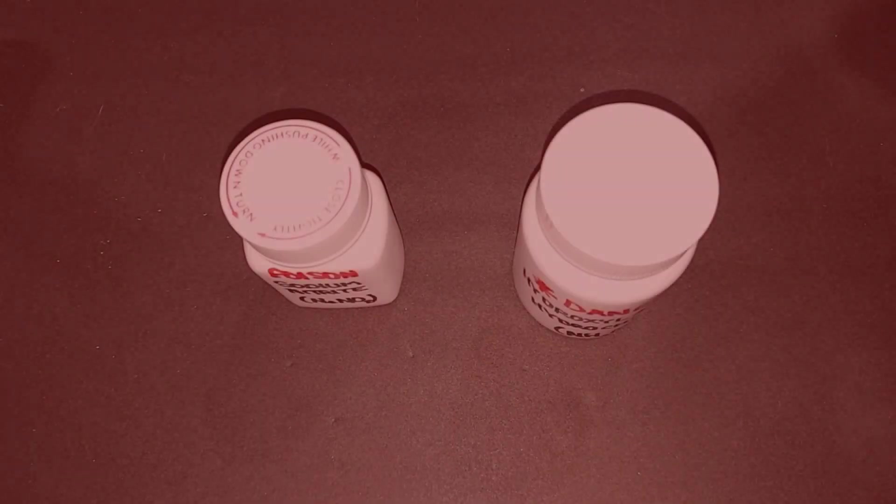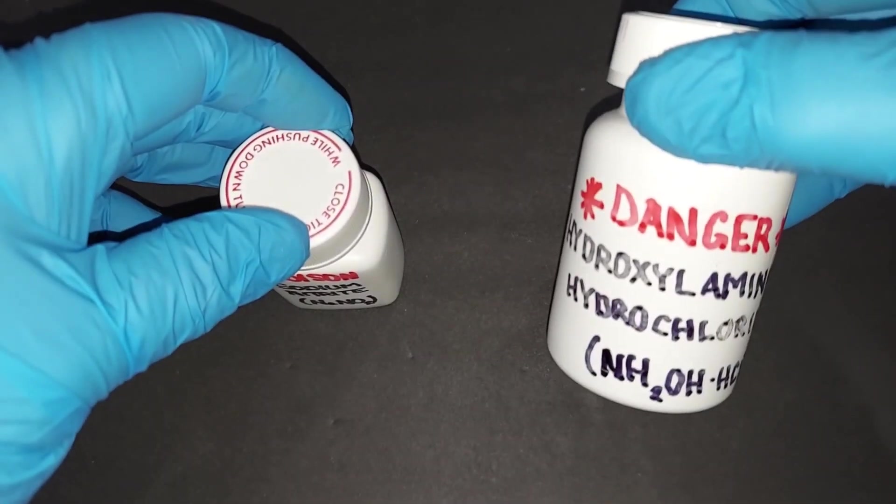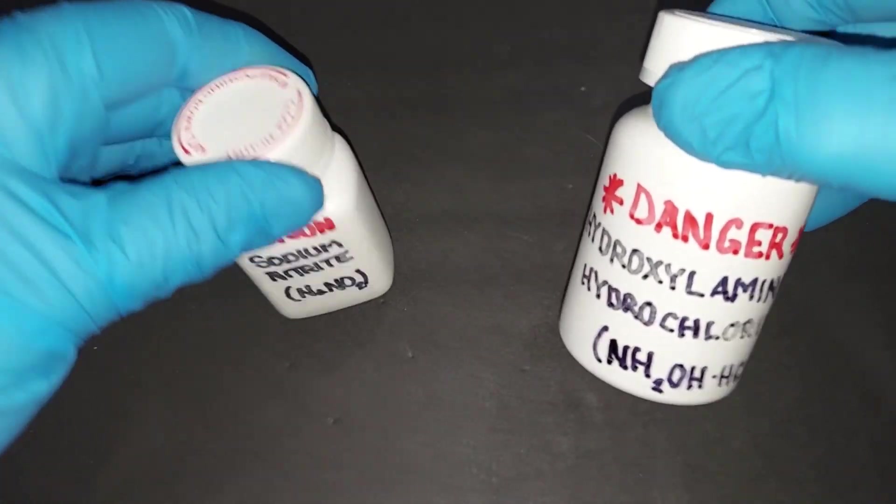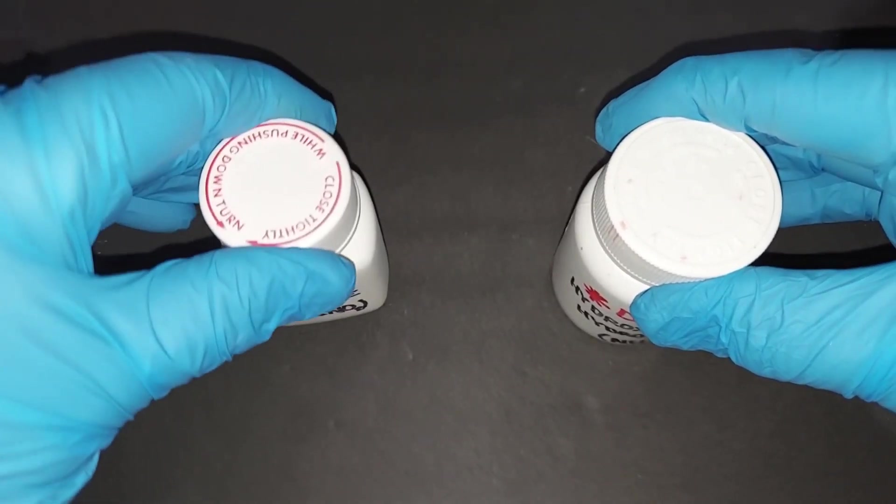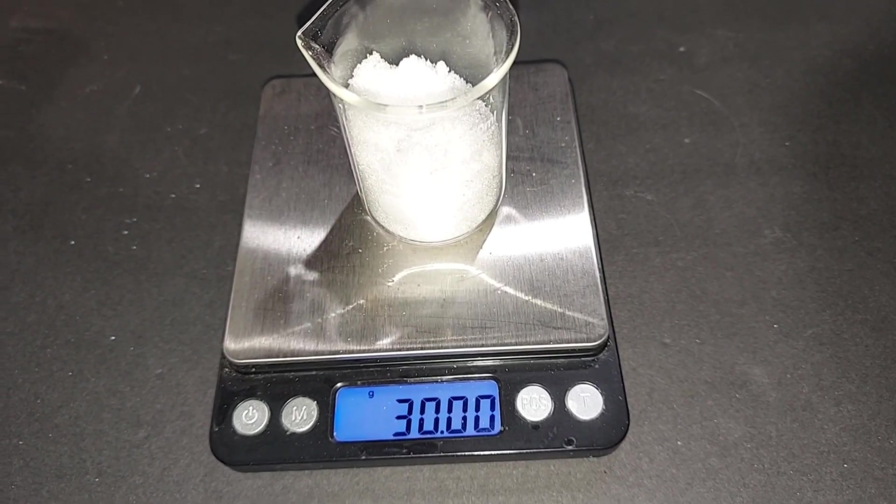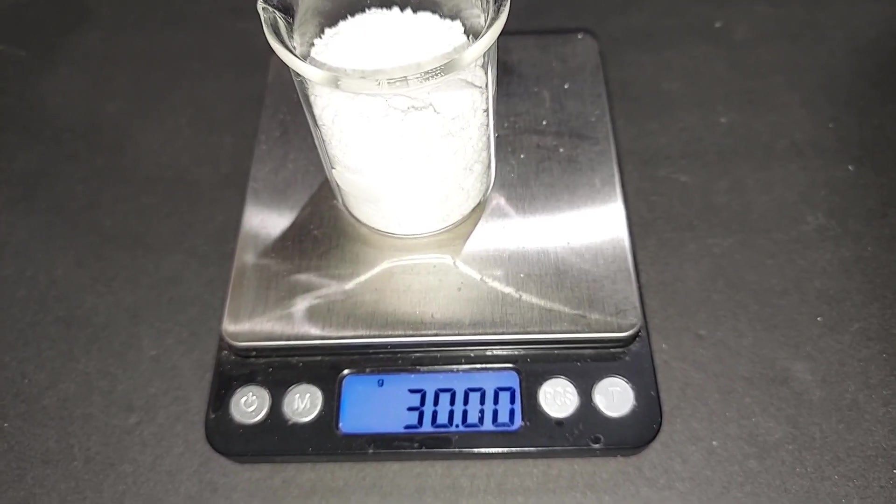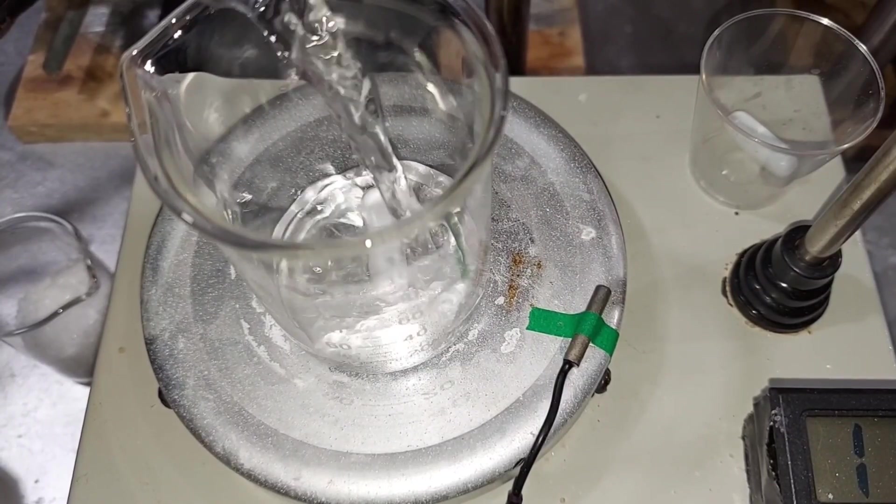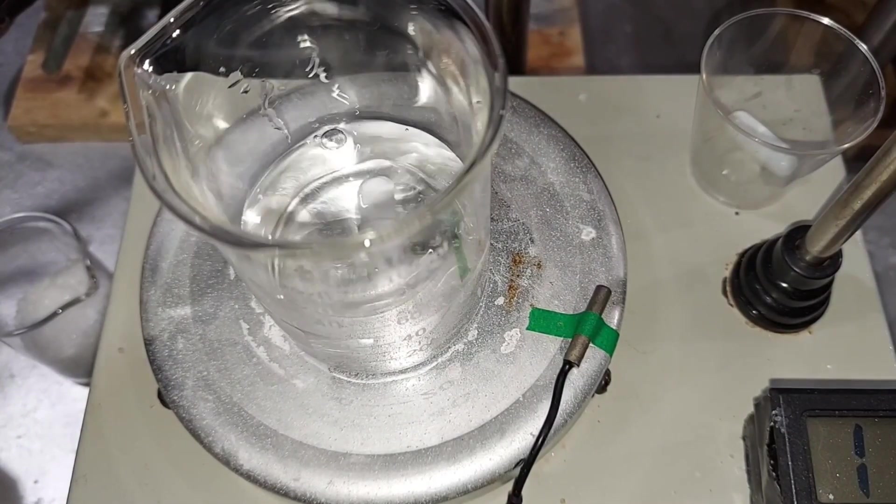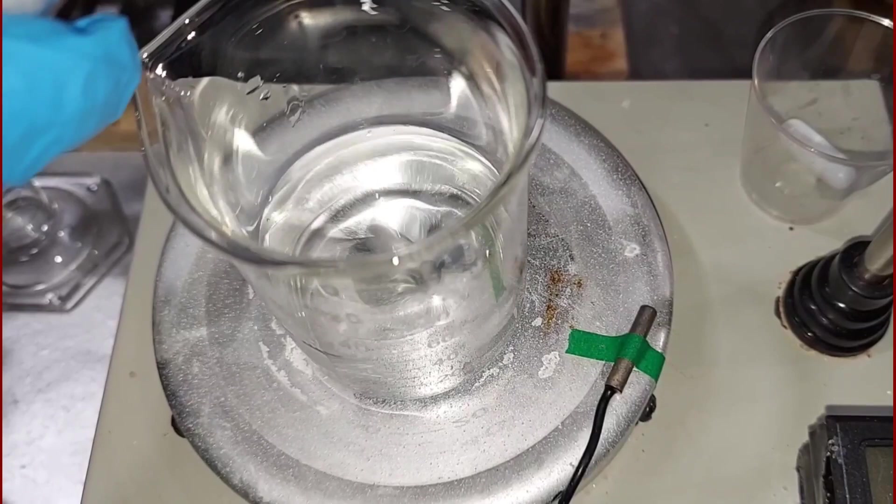To make our nitrous we're going to need 30 grams of hydroxylamine hydrochloride and 30 grams of sodium nitrite that we made in a previous video. 30 grams of hydroxylamine hydrochloride pre-weighed, 30 grams of sodium nitrite pre-weighed. Adding 45 milliliters of distilled water to 100 milliliter beaker.